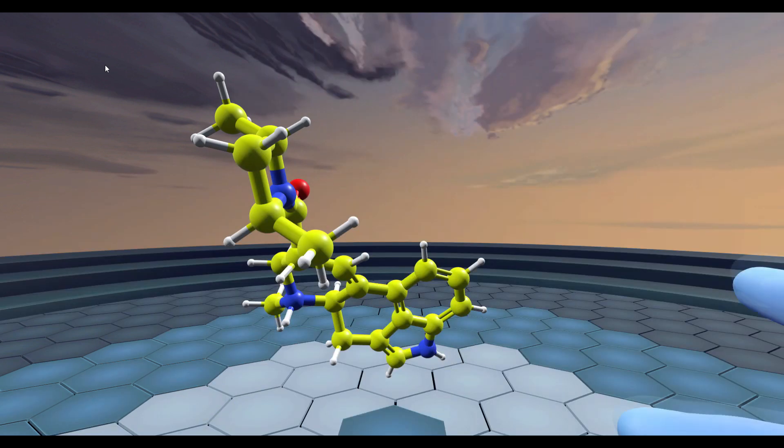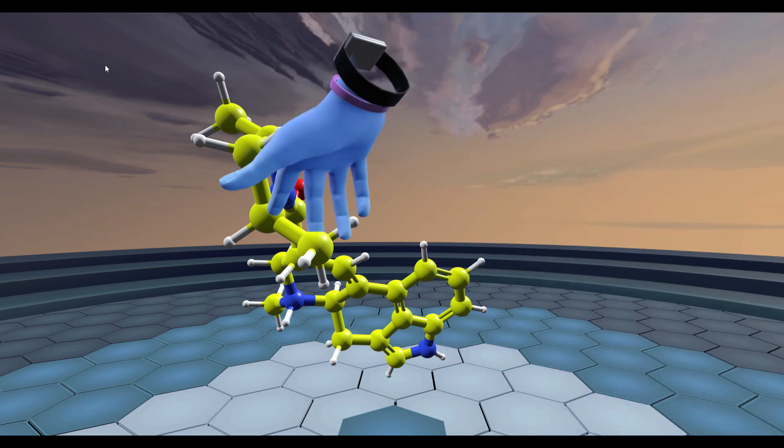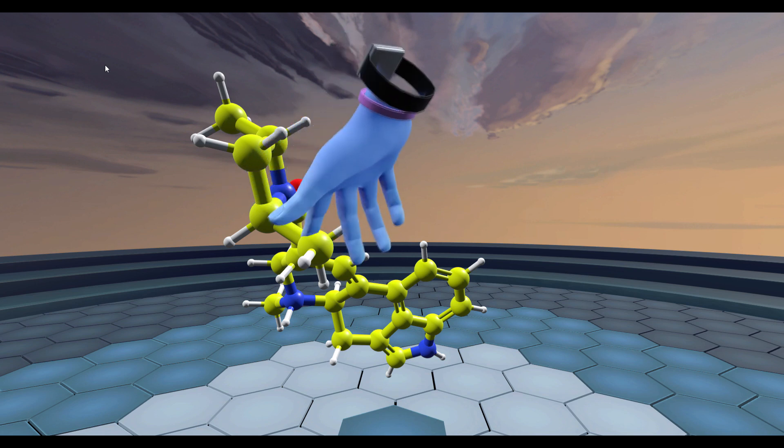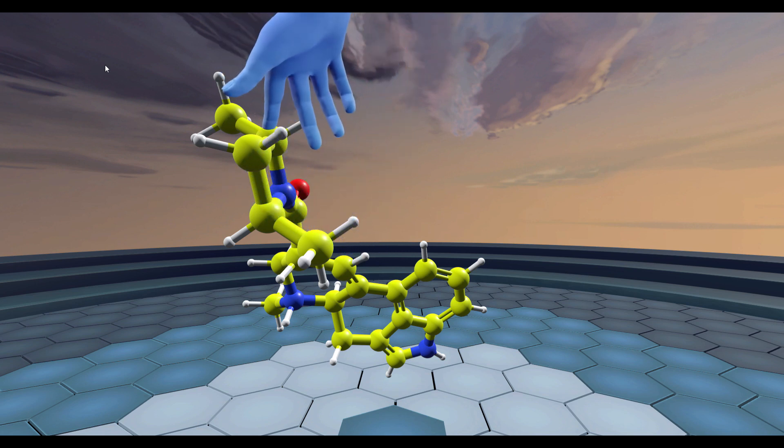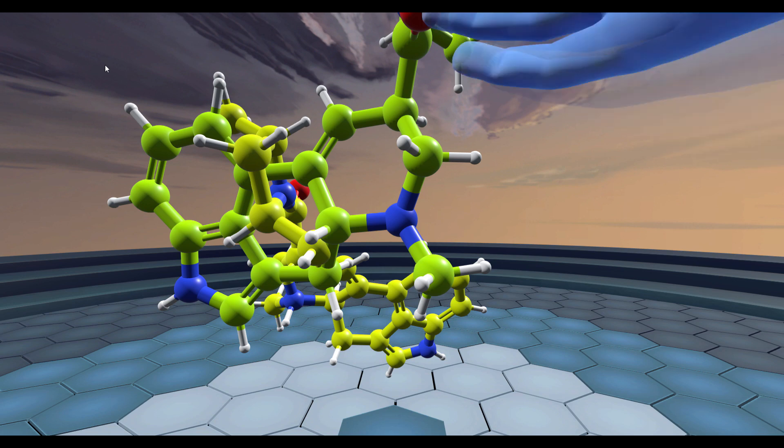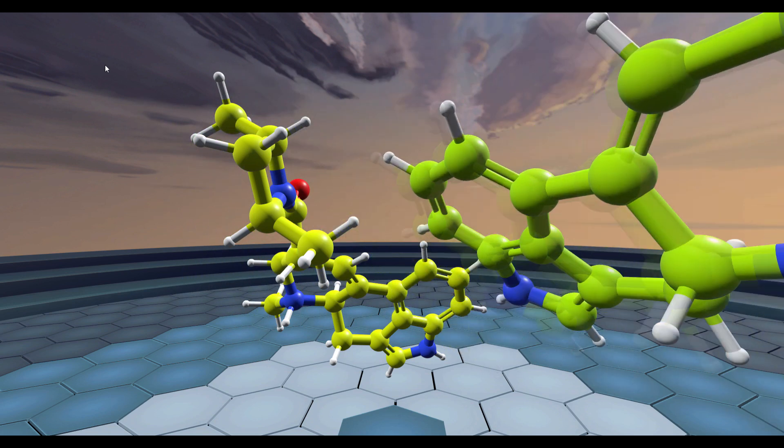He creates this compound called SSAZ. The reason it's called SS is because there's a chiral center right here, meaning that you can have an R or an S enantiomer. You can also over here have a chiral center having an R or an S enantiomer, and thus you can make this compound called SSAZ and you can also make this compound called RRAZ.